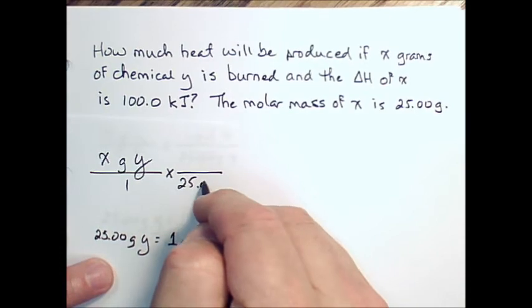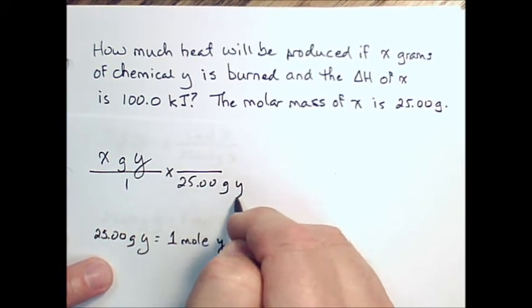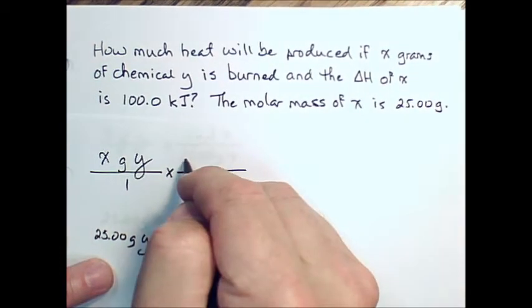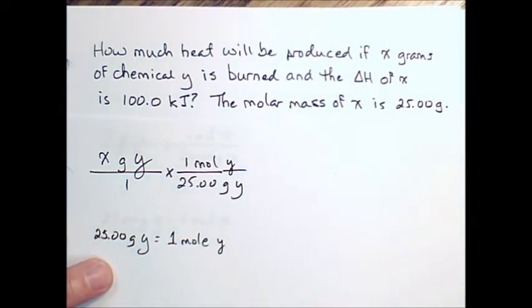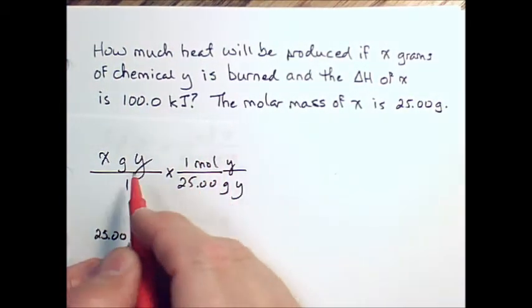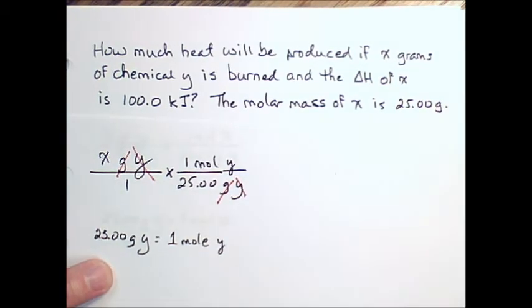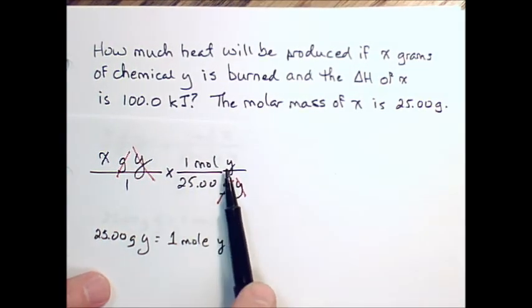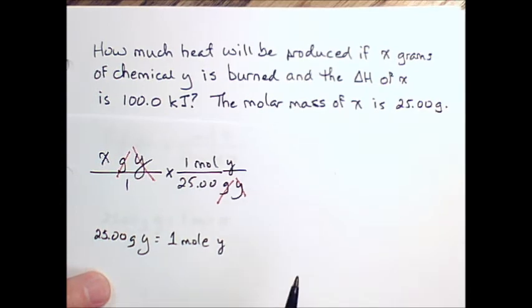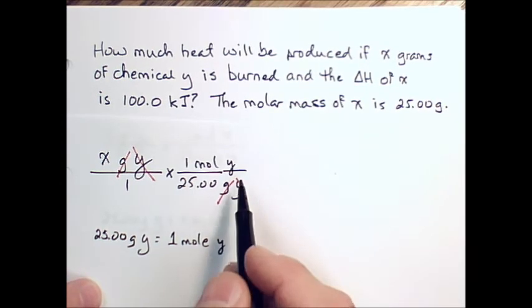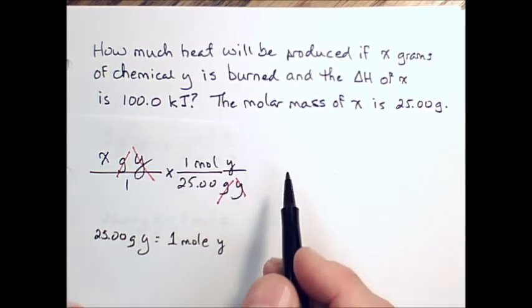25.00 grams of y, and we put one mole of y on the top. That allows us to cancel grams and y. So now we've got our starting species into moles. And we need a balanced chemical equation for a molar ratio now.